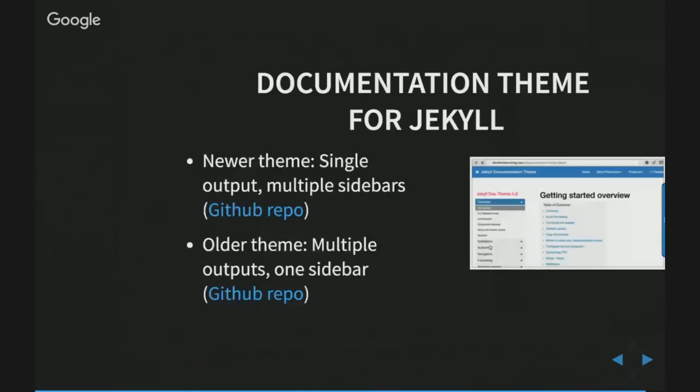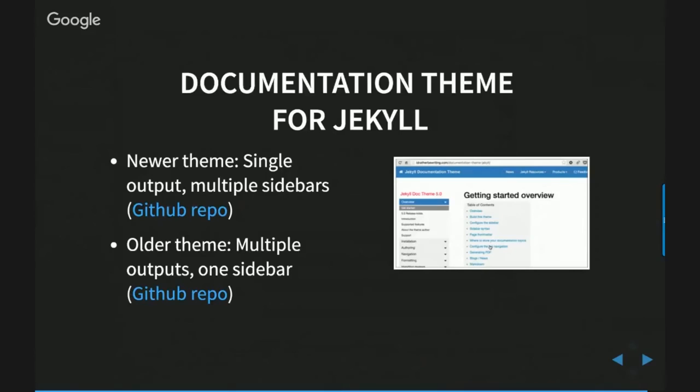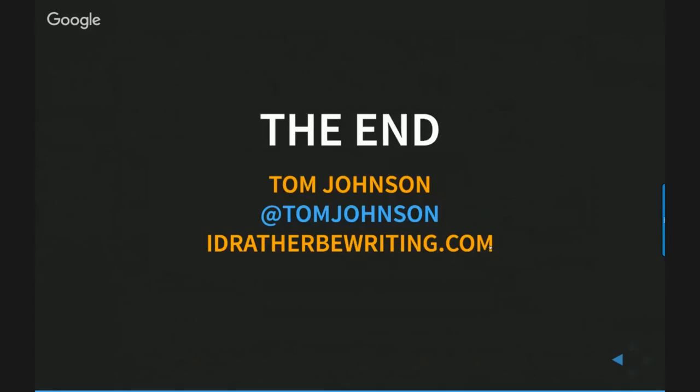If you want to see the doc theme I built, you can check it out at the links in the slides. If you go to IdratherBeWriting.com, there's a Jekyll link on the primary nav bar that takes you to them. I have a couple of different versions — a newer and an older theme — but you're welcome to look at them. More than anything, it's a logbook about how I tried to overcome some of these challenges. You can see if my way of doing it works for you, but at least it gives you some comparison as you assess things. That is all I have — I'll open it up for questions.